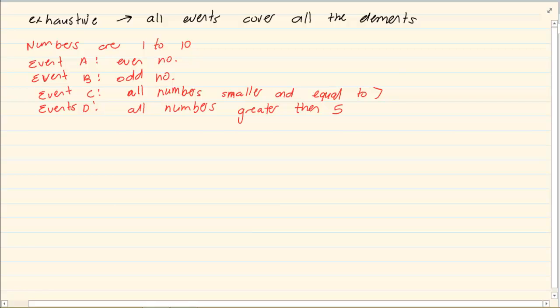Now if I ask you, tell me if event A and B is exhaustive or not. So I got A, I'm working with event A and B. We know that they are even numbers and odd numbers. So they are not going to touch. So I am specifically working with A and B.